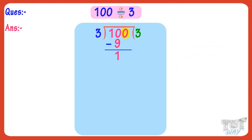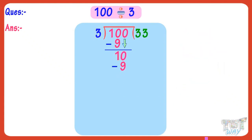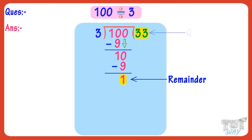Now one digit is left in the dividend — it's 0. So bring it down. Now we have to divide 10. 3 multiplied by 3 equals 9. So write 3 in the quotient and 9 below 10. Subtract. On subtraction, we get 1. Now 1 is less than the divisor, that is 3. All the digits in the dividend are divided and no more digits are left. If we are not asked to find the answer in decimals, then 1 is remainder and 33 is the quotient.